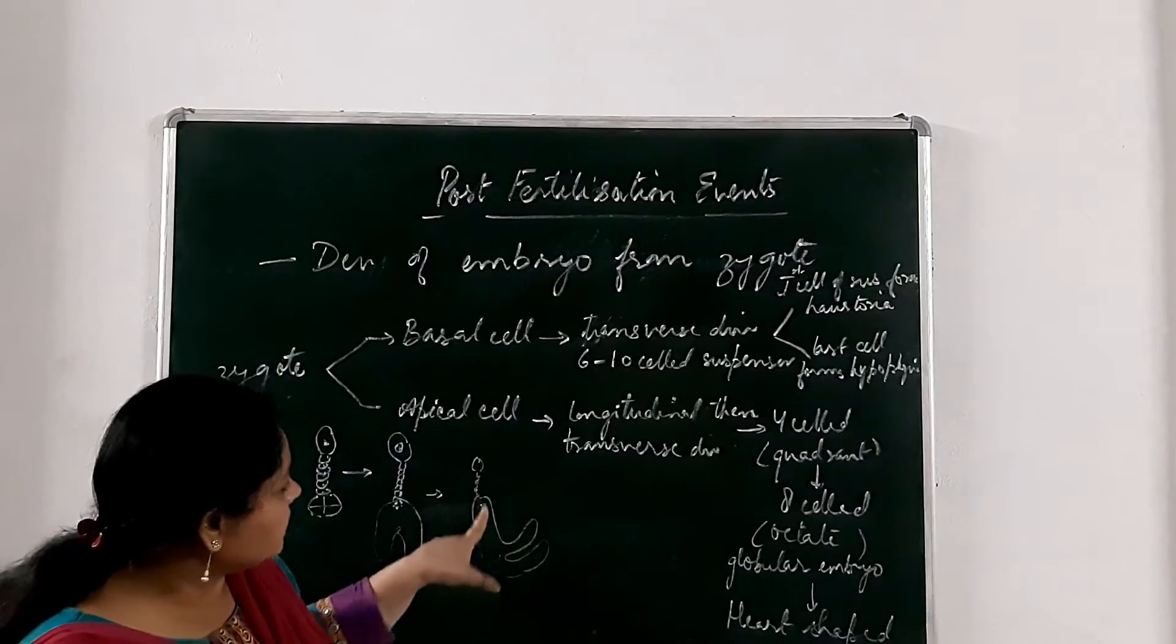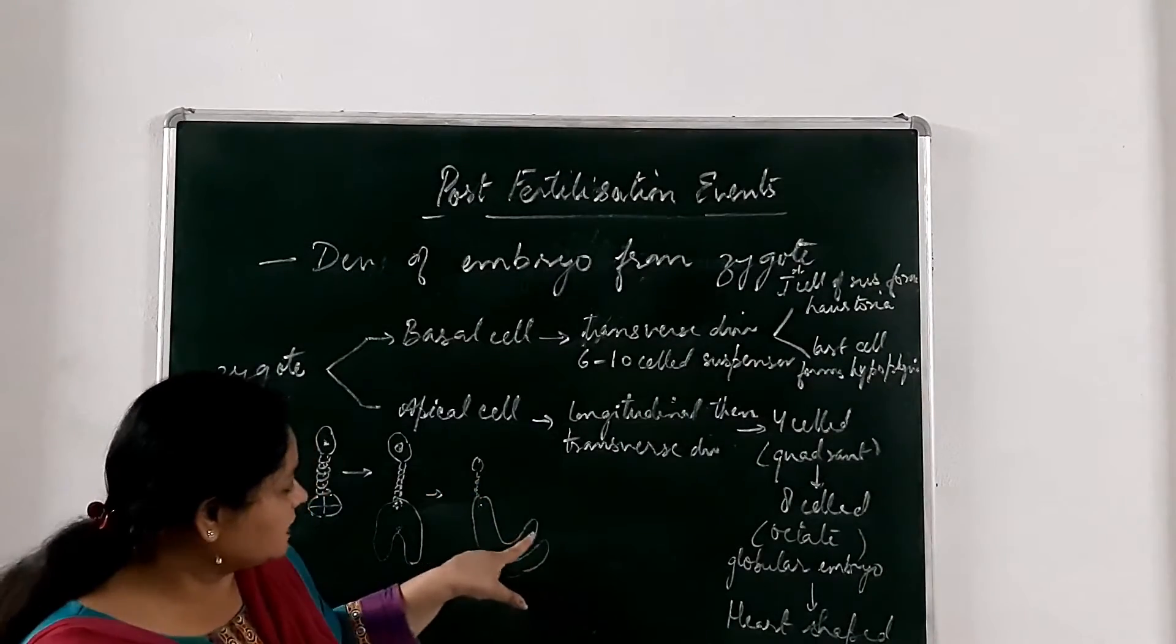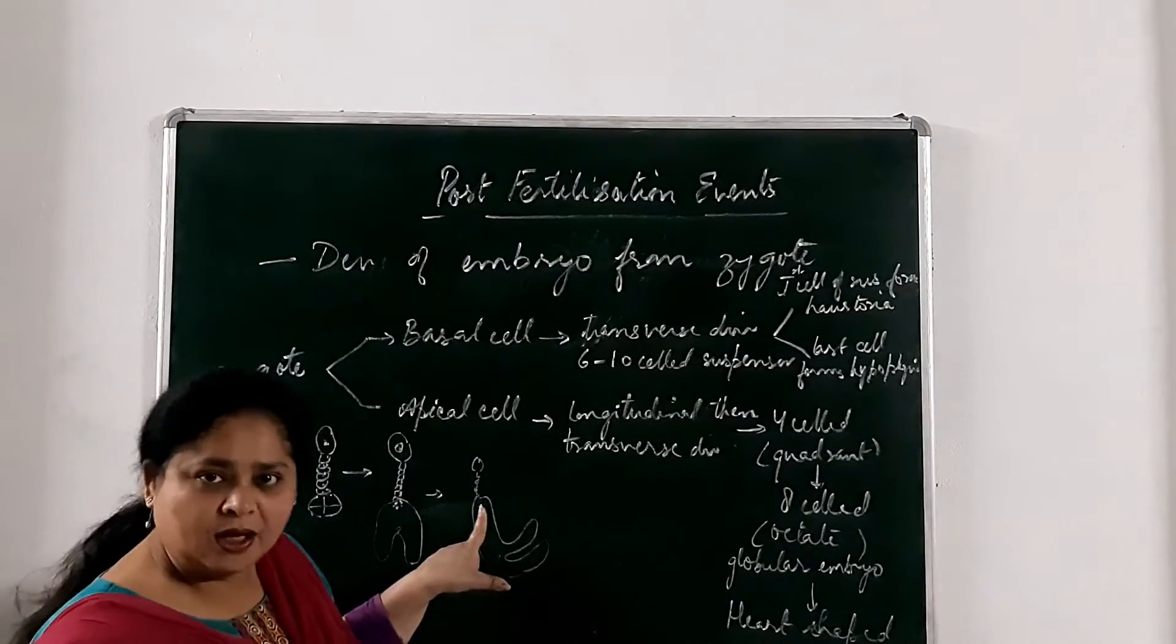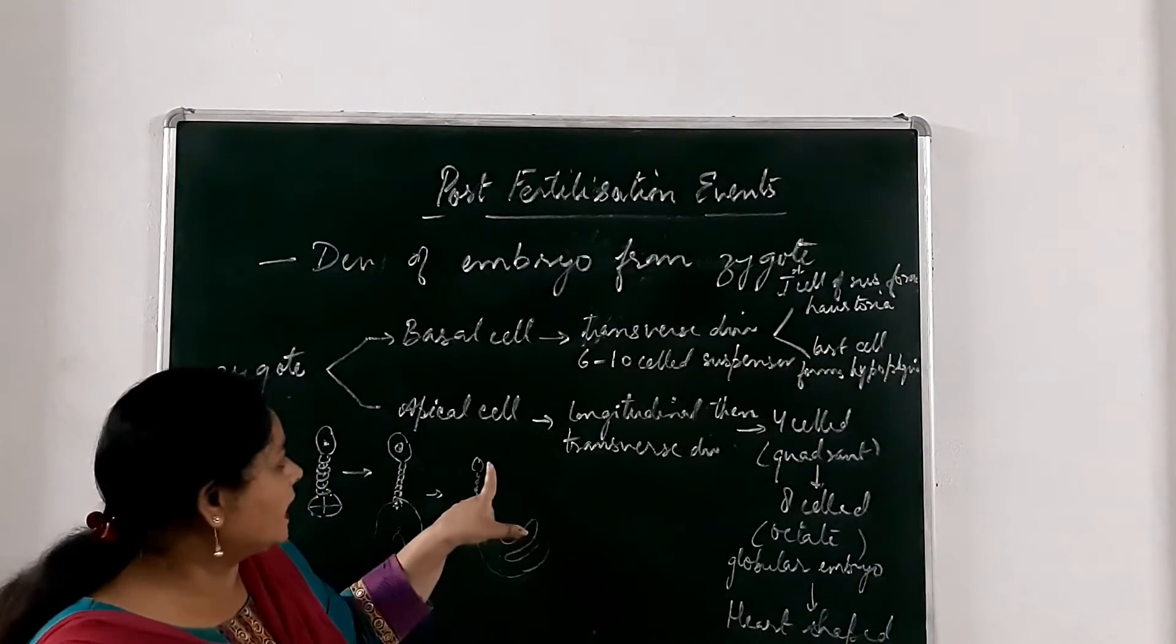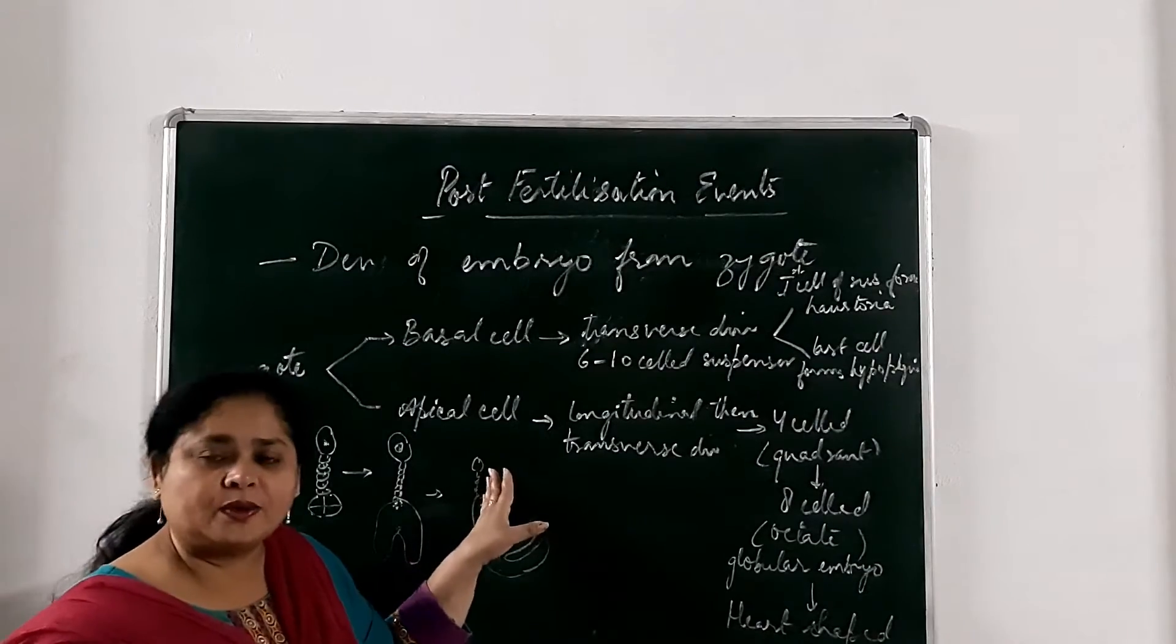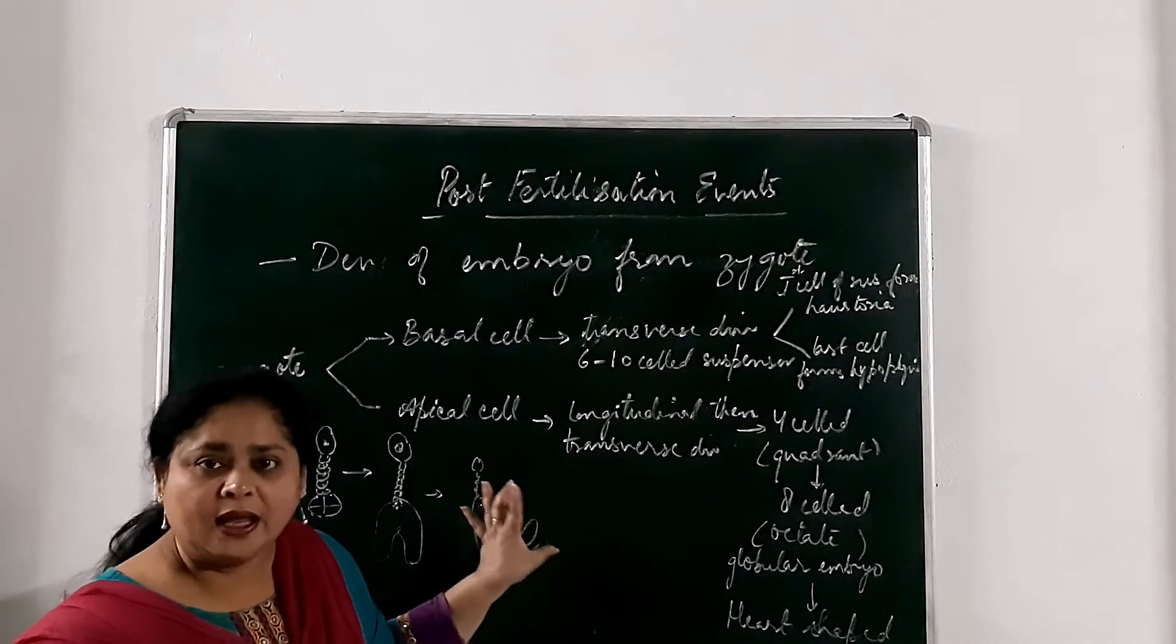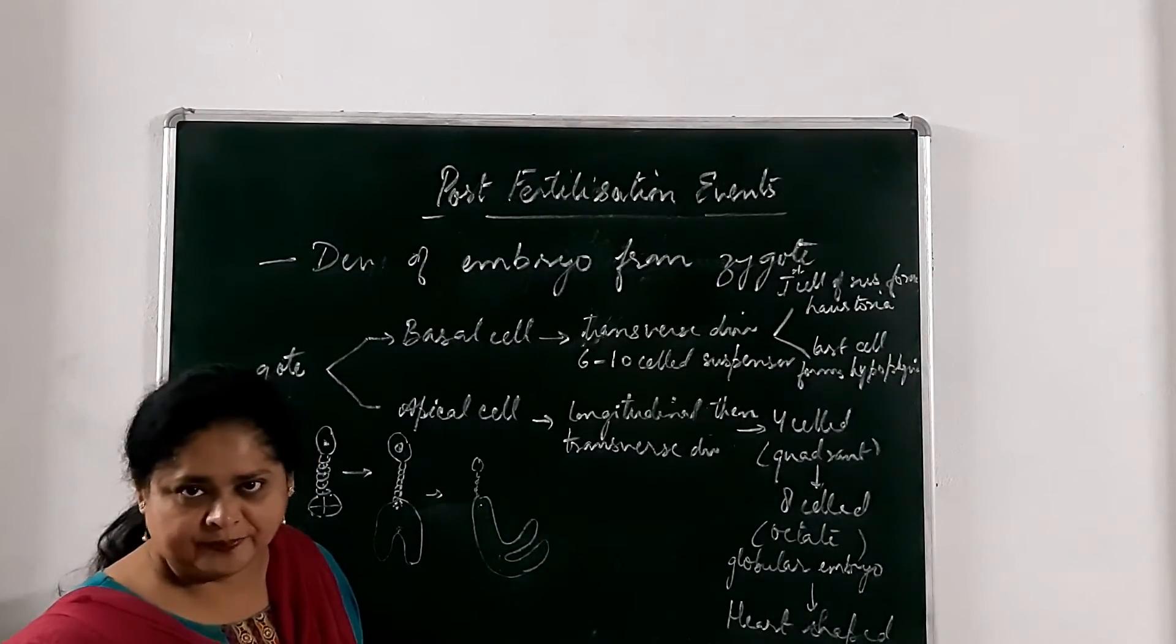Now you can see that this will become in this shape. These are the cotyledons of the developing embryo. This is the radical region. This is the plumule region. And this is the suspensor with the haustoria. Now this basal cell of haustoria is towards the micropilar region. And this portion of our embryo is the clasal embryo form.